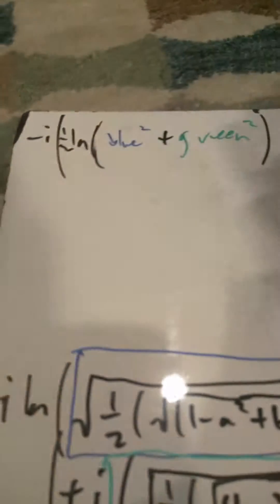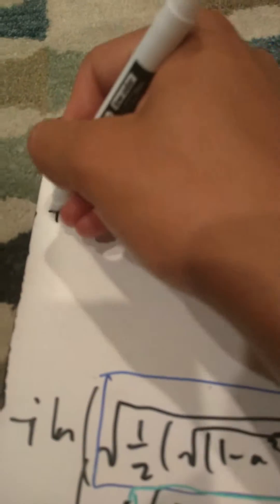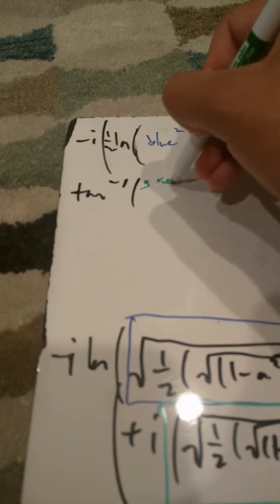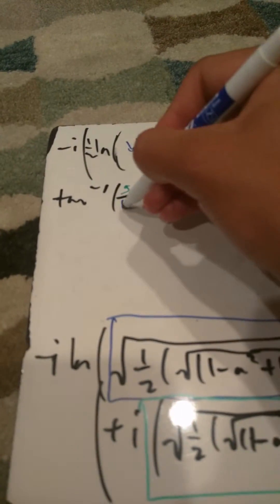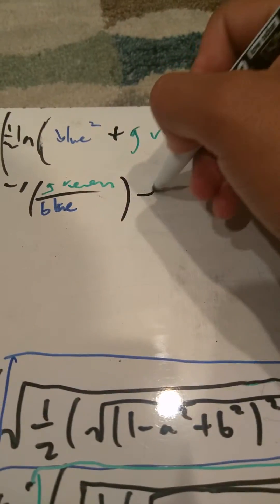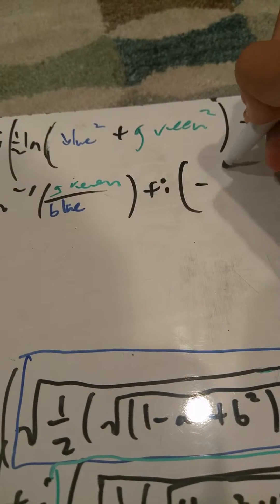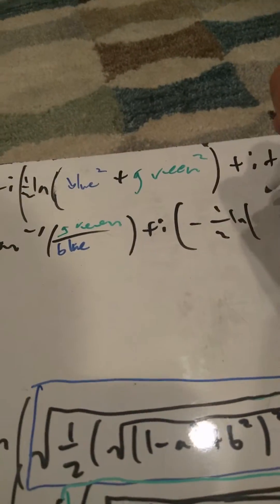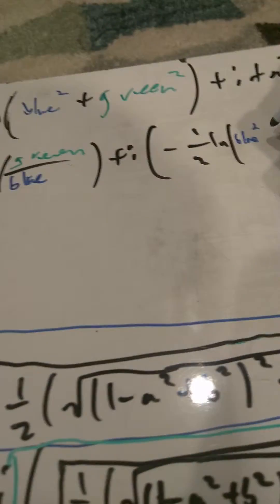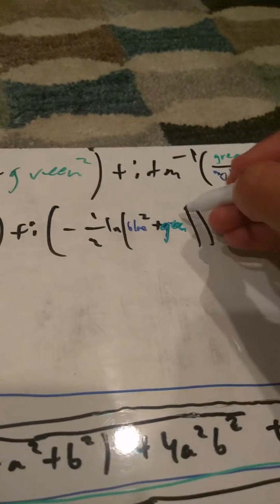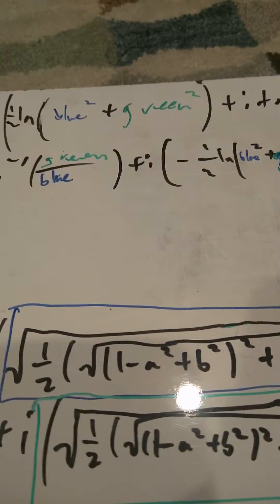If you distribute the negative i — i times i is negative — so the arctangent part comes to the front: arctan of green over blue. And then we have plus i times negative one half ln of blue squared plus green squared.